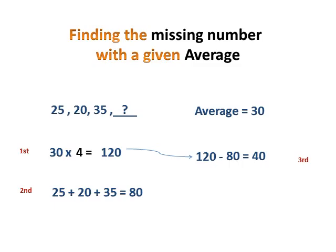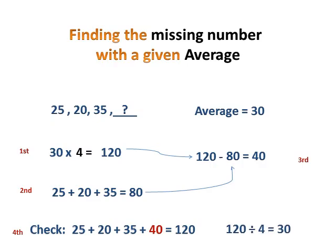Let's check if that's actually correct. This is the checking part. If you add all the four numbers now, 25, 20, 35, and 40, the sum is 120. If you get the average of that, so that's 120 divided by 4, you've got 30. So therefore your 40 is correct.